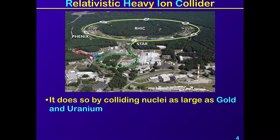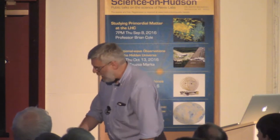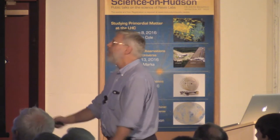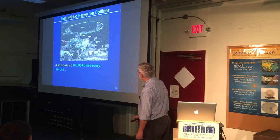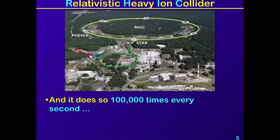By colliding nuclei as large as gold and uranium — some of the largest in size and atomic mass that exist in our universe — it does this a hundred thousand times a second. That's actually quite often, but it's peanuts compared to what we do at the LHC. Still, we do this a hundred thousand times a second at RHIC.